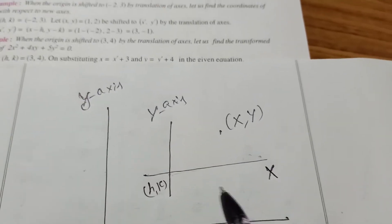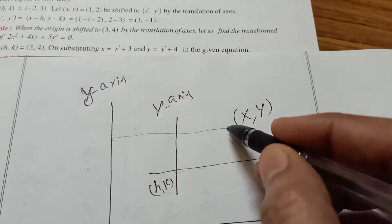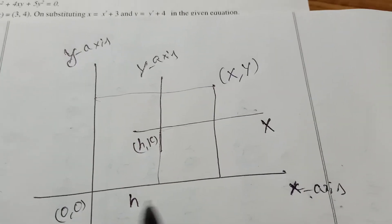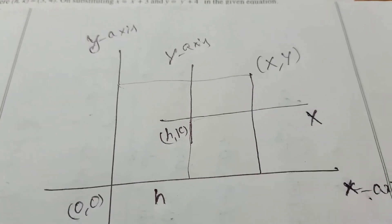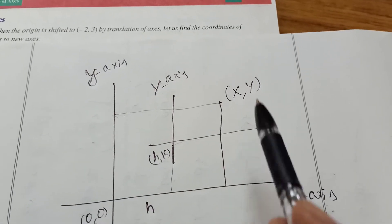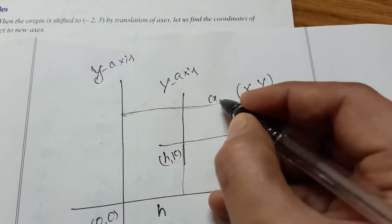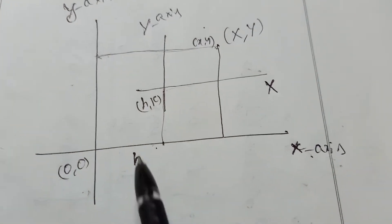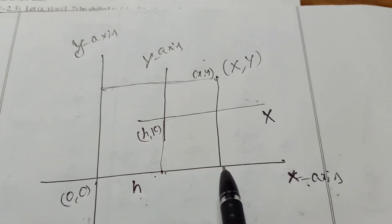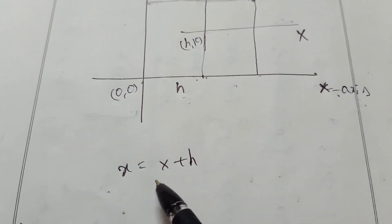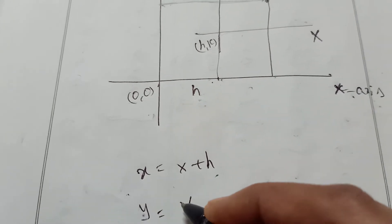If we want the original axis, see here: this distance is H and this distance is capital X. So small x equals capital X plus H. That's why the formula is: small x equal to capital X plus H, and similarly small y equal to capital Y plus K.